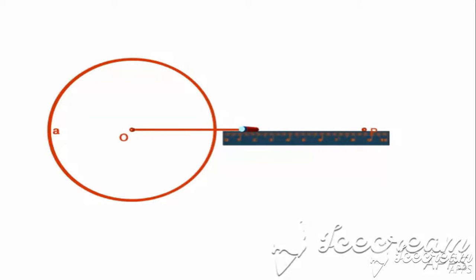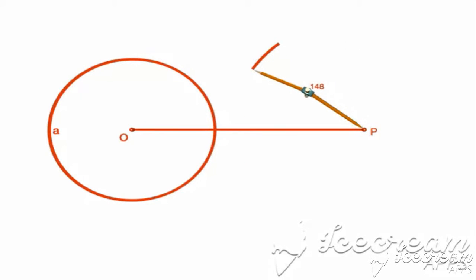Now, join O P. With some radius from P, draw two arcs above and under the O P.